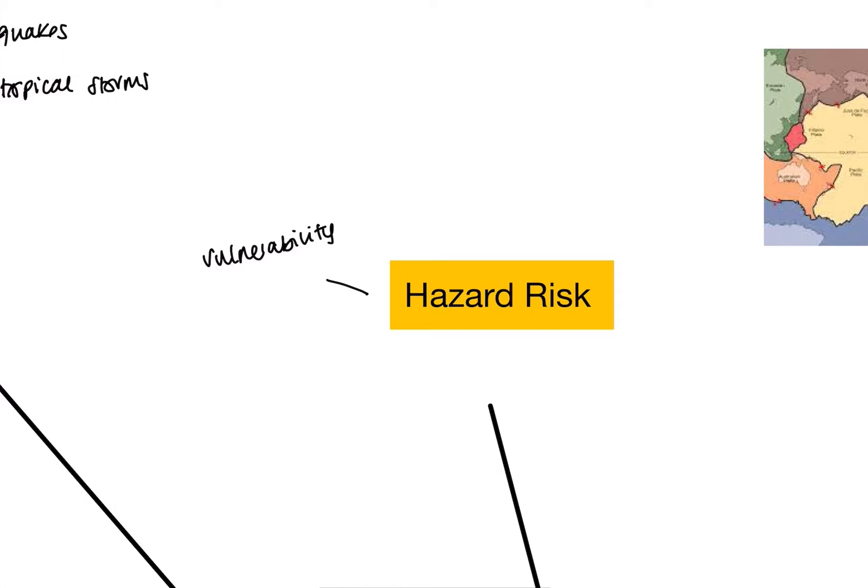The second thing we've got that might increase hazard risk would be what we call capacity to cope. Capacity to cope could mean that more developed areas have better access to resources, so that lowers the risk for them. Therefore, they have a greater capacity to cope.